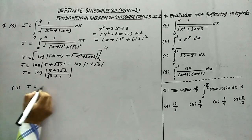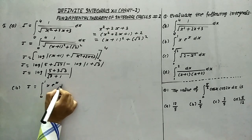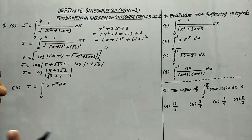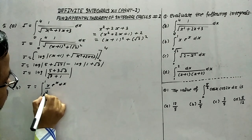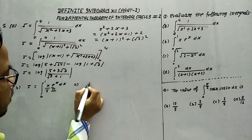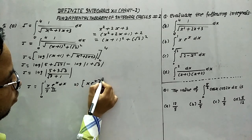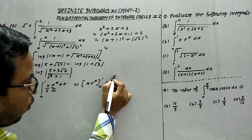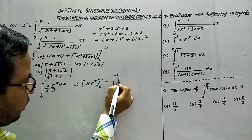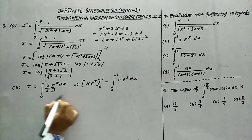Now in part v, we have to find out the integration from 0 to 1 of x·e^x dx. Here we will use integration by parts. The first function is x and the second function is e^x. Keeping the first function as it is and integrating the second, then subtracting the integral of the derivative of the first times the integral of e^x dx.